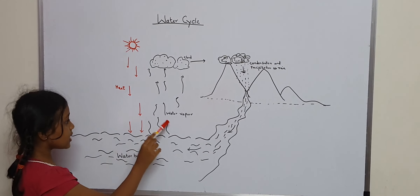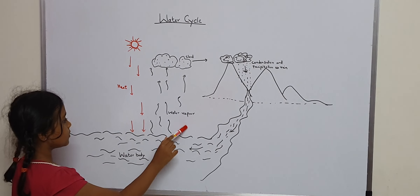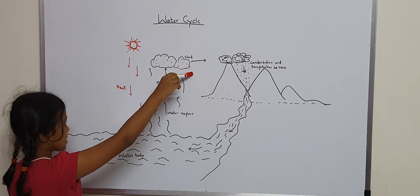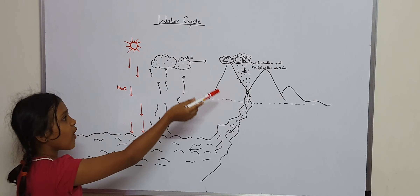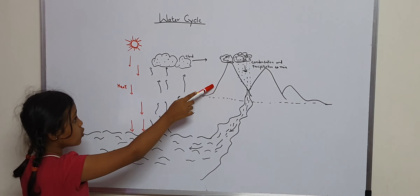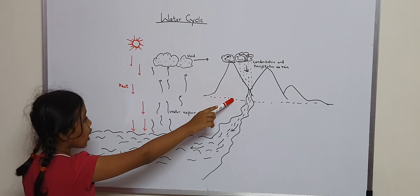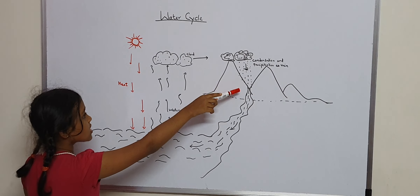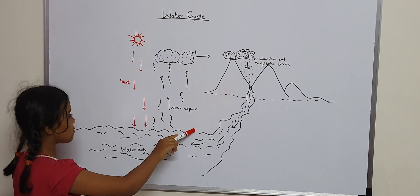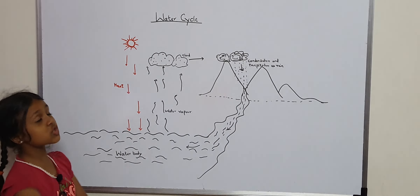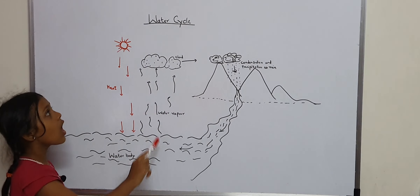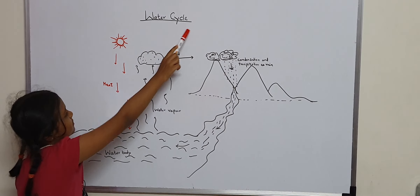The sun hits the water. The water vapor goes up in the air and forms clouds. When these clouds cool down, it starts raining. It again goes back to its water body. This whole process is called the water cycle.